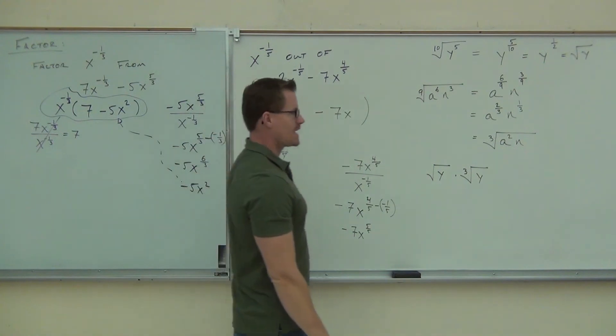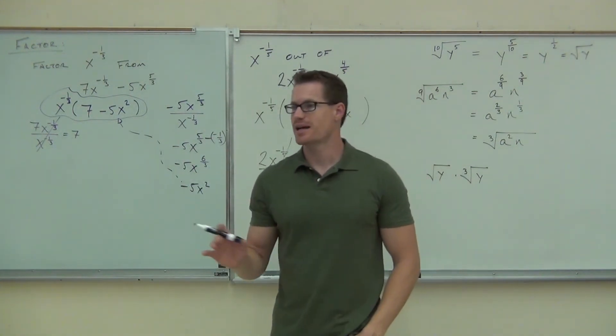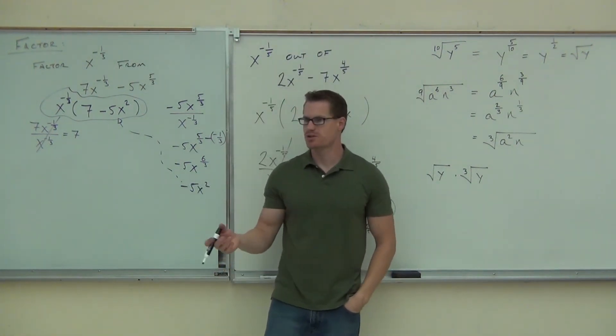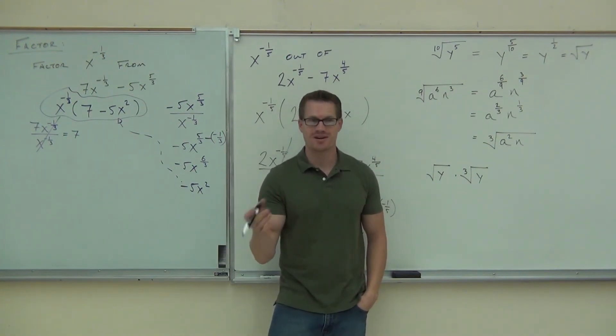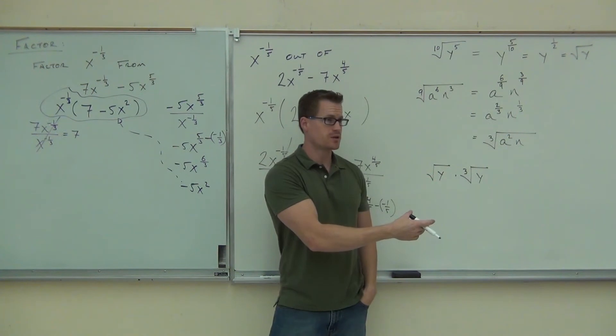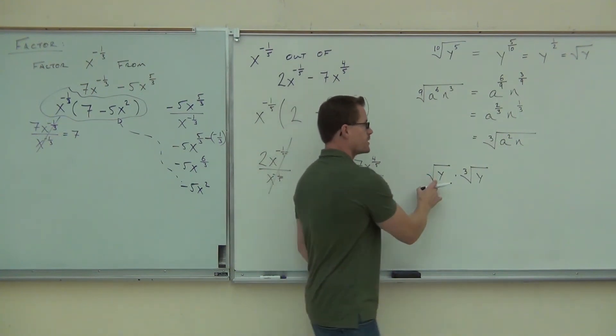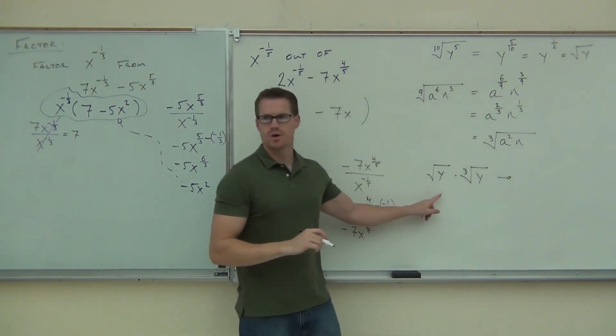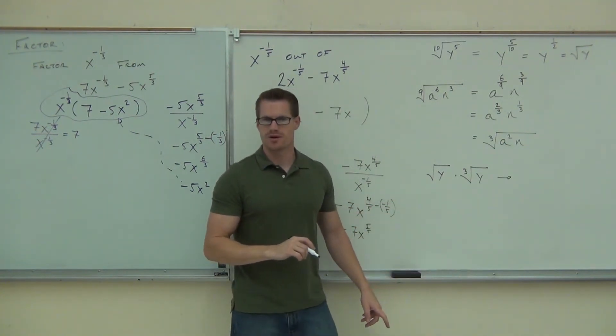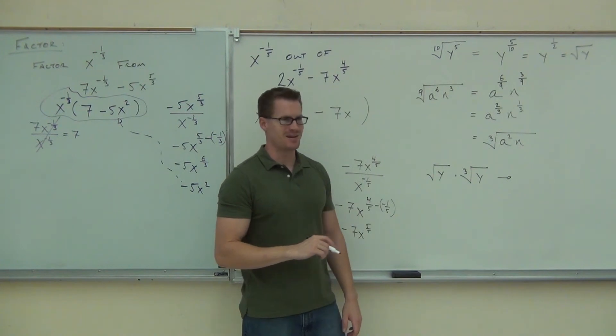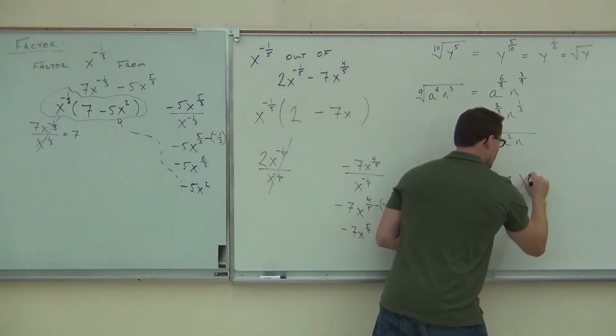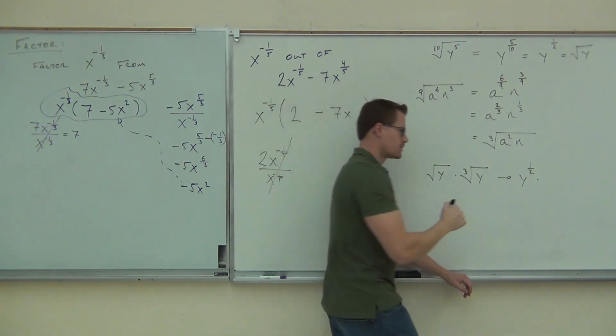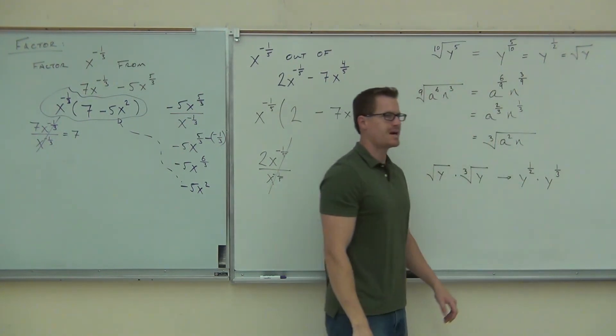We have a square root of y times a cube root of y. Is there any way that we can write this as one root? I don't know. In order to see that, maybe we're going to translate this into some fractions because we know that fractions are, ironically, a lot easier to deal with than these roots in our head. Because we're familiar with fractions, at least. So let's go ahead and write the square root of y and the cube root of y as some fractional exponents. What's the first one? Y to what power? One half.